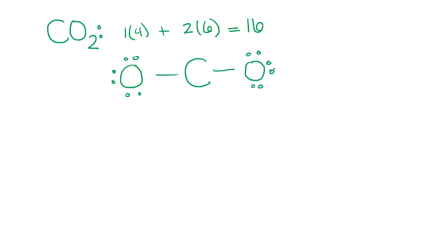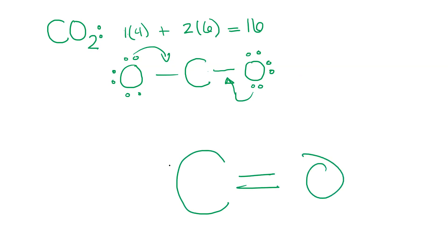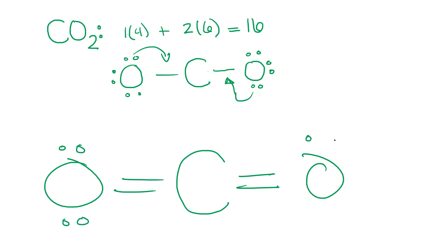Now I've used all 16 electrons. The oxygens both have octets, but carbon does not. So let's form double bonds to that carbon, one with each oxygen. The final Lewis structure becomes: carbon in the center, double bonded to each oxygen, with a couple of lone pairs on each oxygen.